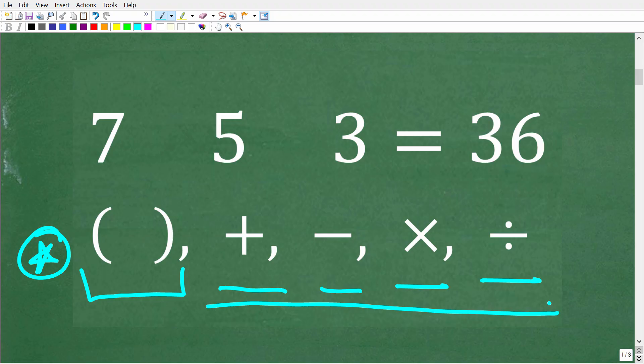So what we can do is just try different number operations. So maybe we can add these numbers up. So 5 plus 3 is 8. 8 plus 7 is not going to be equal to 36. So certainly this is not the answer.